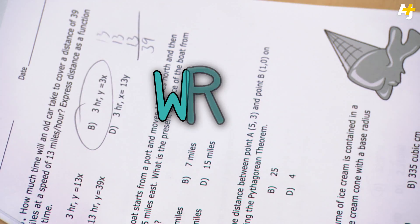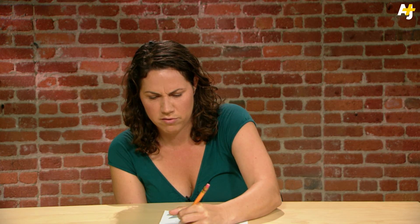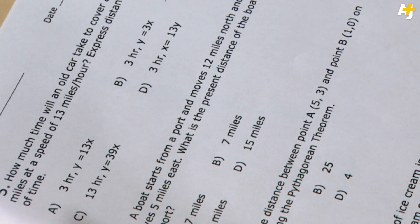How much time will an old car take to cover a distance of 39 miles at a speed of 13 miles per hour? Why are you driving 13 miles an hour? What is wrong with your car? Express distance as a function of time. I'm circling B and I'm getting a little concerned because B has been my answer for the last 4 or 5 answers. I'm pretty sure the answer is the speed of light. 39 divided by 13 is 3. 13x equals y.